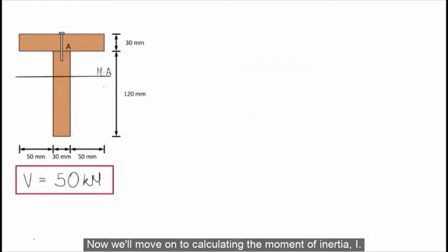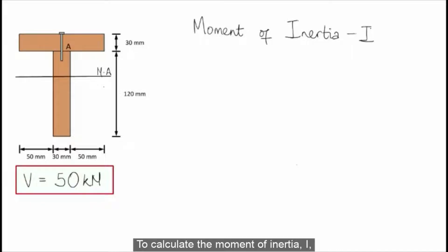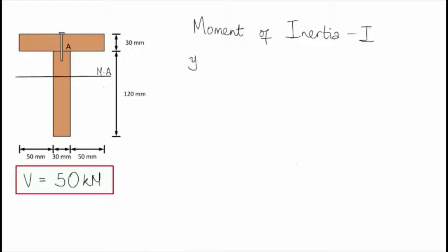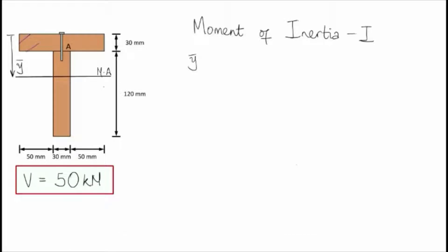Now we will move on to calculating the moment of inertia I. To calculate the moment of inertia I, we will first need to determine the centroid location of this beam cross-section, which is also the location of the neutral axis, and we will call this Y-bar. Upon observation, we can see that this beam cross-section can be divided into two components, and they are 1 and 2.